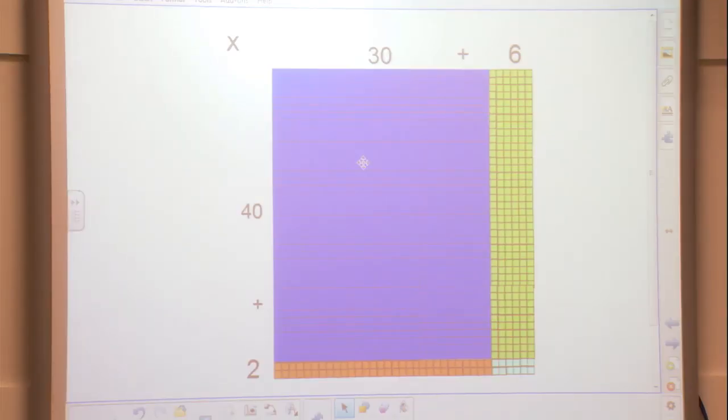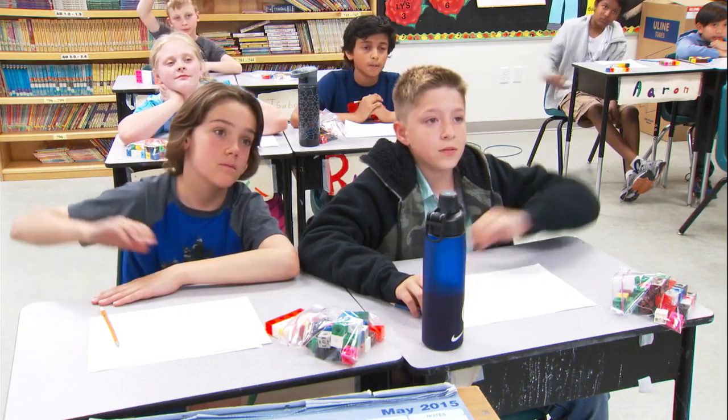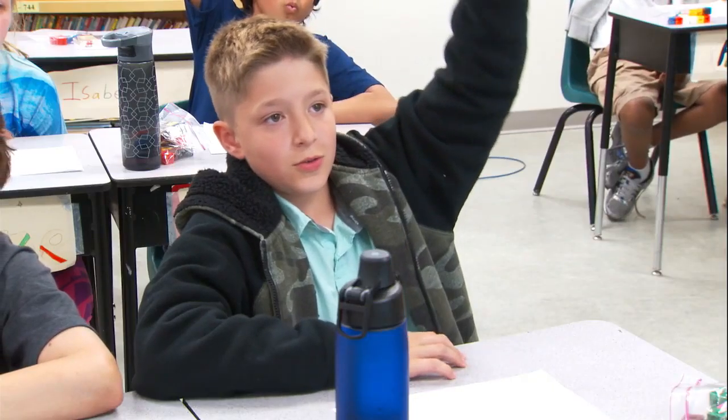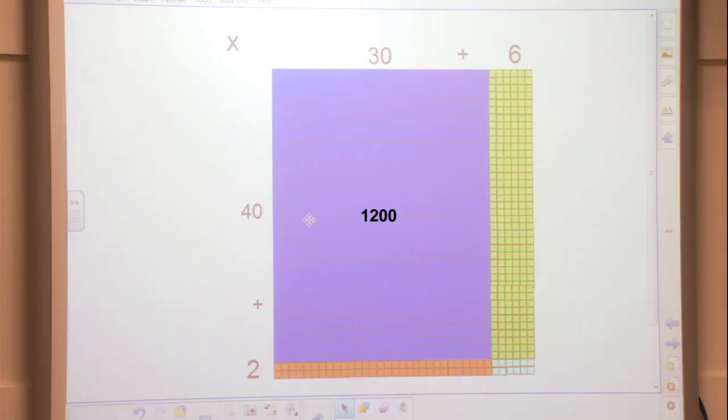So the first part of the array we're going to look at is the big blue section. So this big blue section would be 30 times 40. So if we were to start with that part, how many squares or little blocks would there be inside that 30 times 40 array? Evan? 1,200. Very good, there would be 1,200 blocks inside of that array.